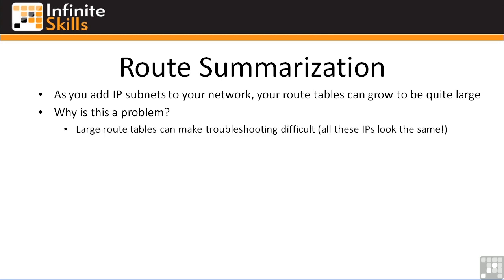First off, large route tables can make troubleshooting difficult. All these IP addresses look the same — is that a slash 23 or a slash 24? The 10.4 network, is it over here or over there? If they're all listed together, it's kind of hard to remember what network goes to what router unless you've got a map or a diagram. And if you're like most network engineers, your map or diagram is obsolete about 20 minutes after you make it. That's kind of a human or engineering problem, and it's not really that big of a deal.